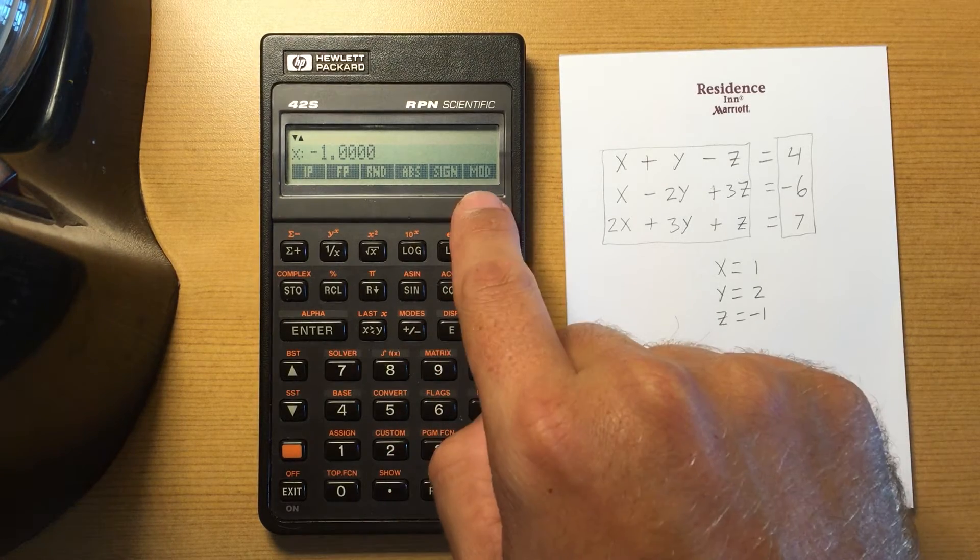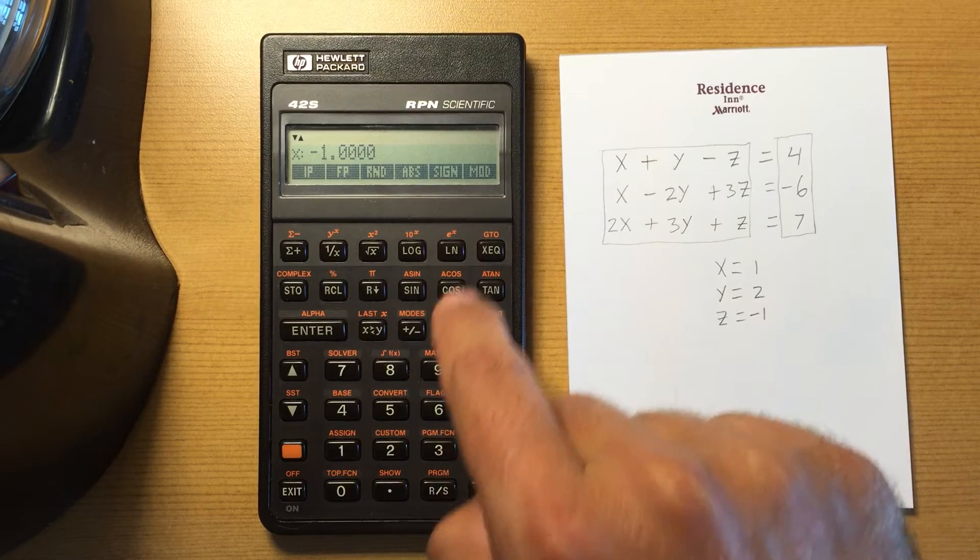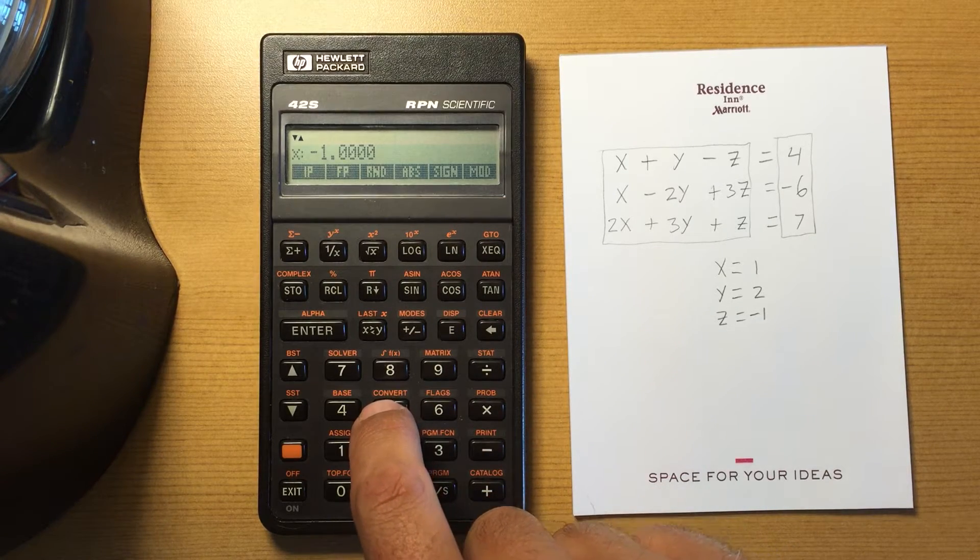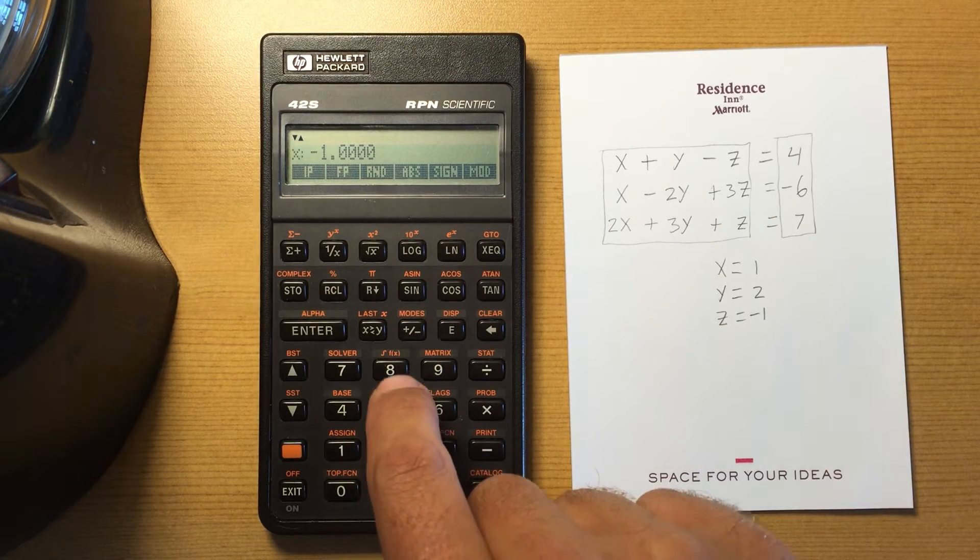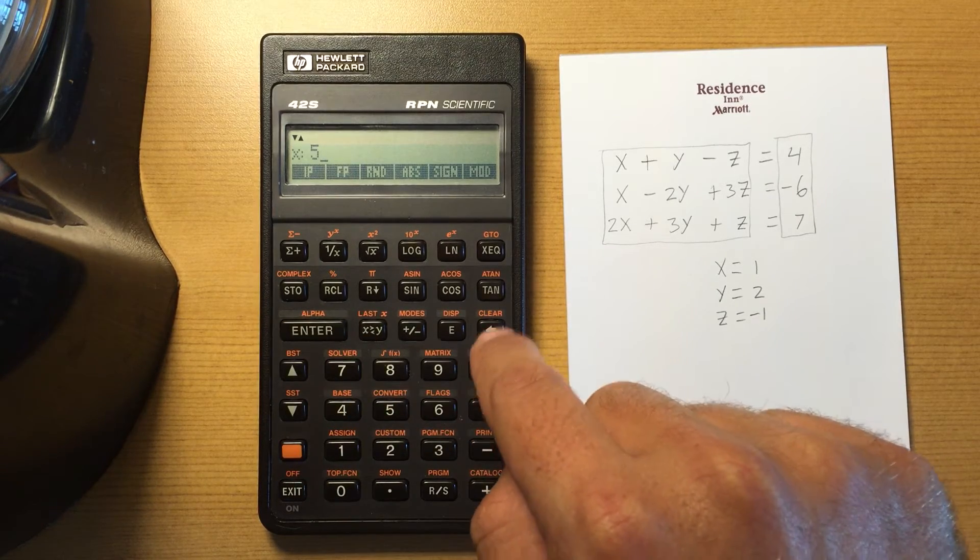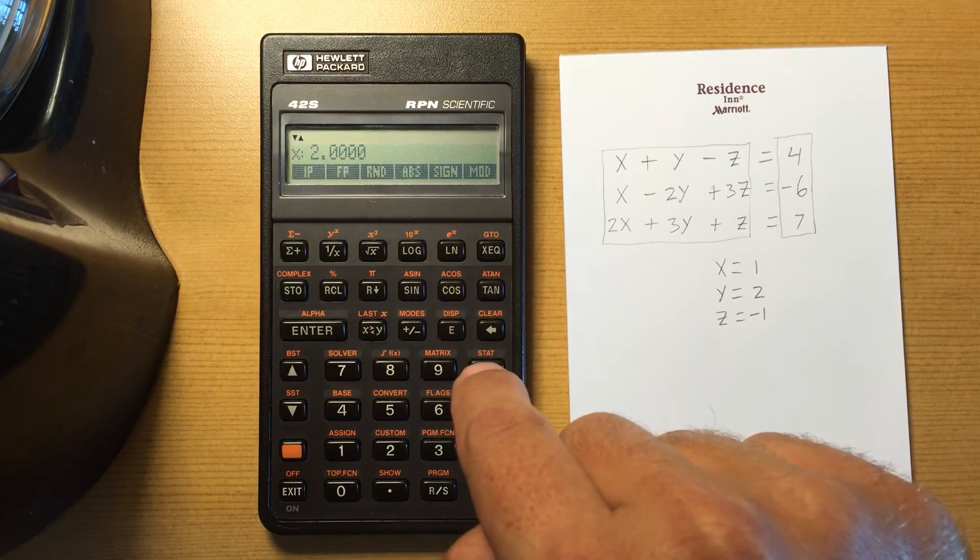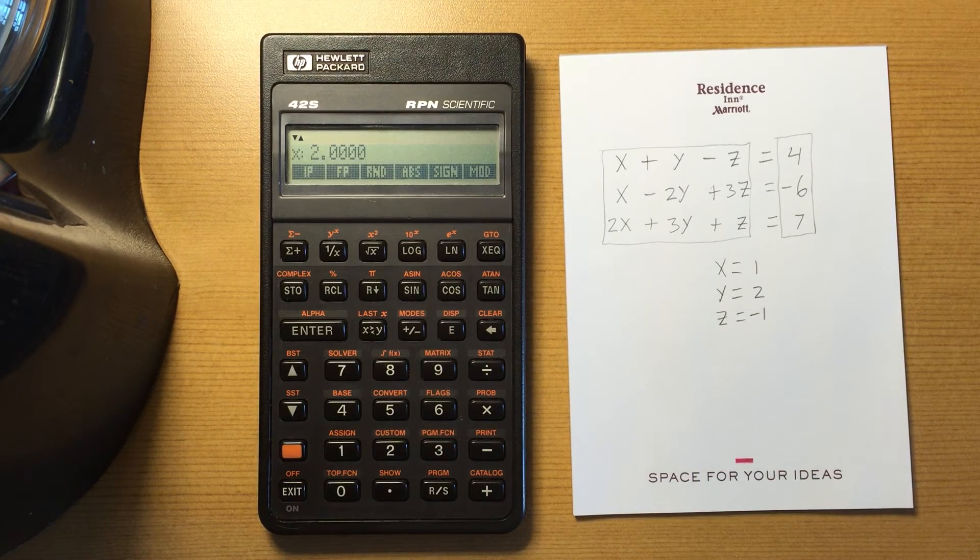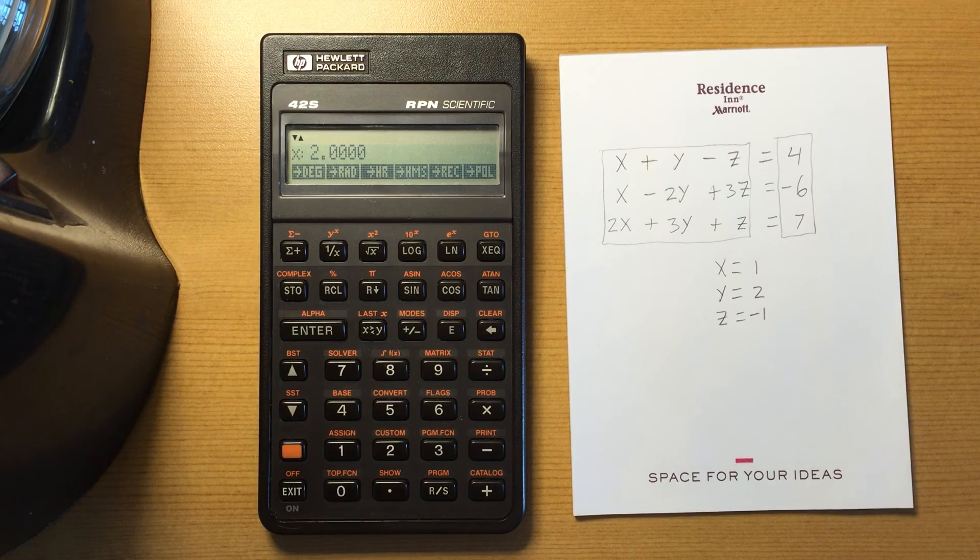And then lastly, mod is the remainder of y divided by x. So if I have 7 divided by 5, the remainder of that is 2, modulus. All right, so that's the convert menu.